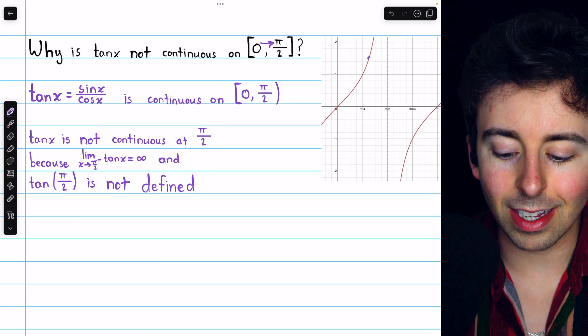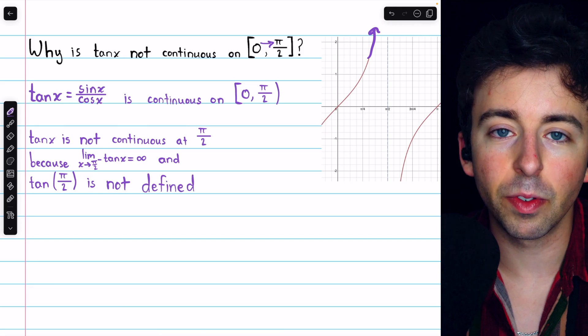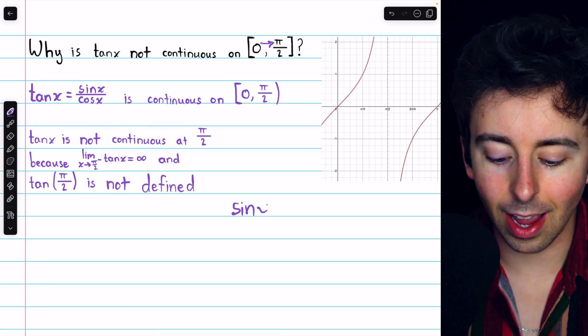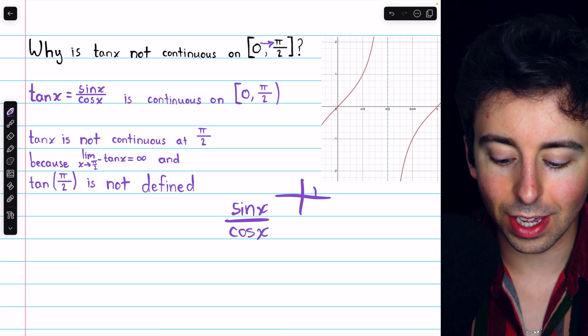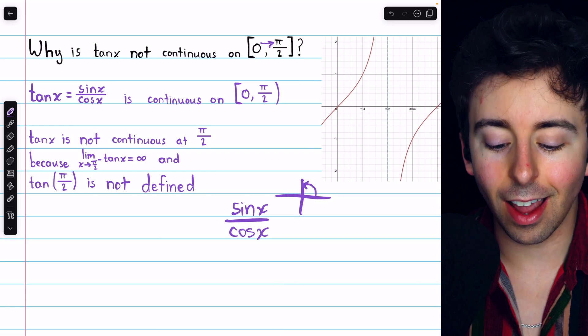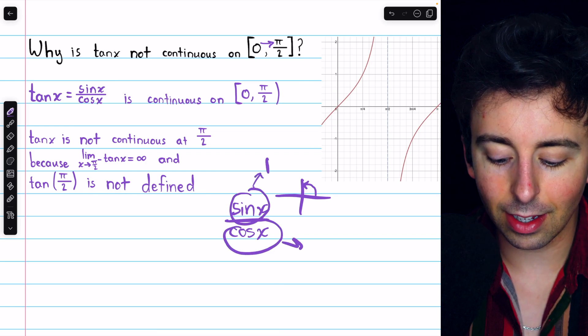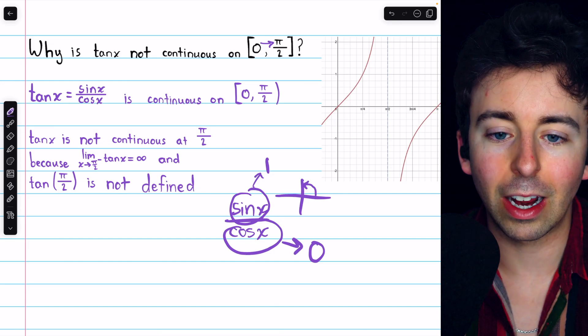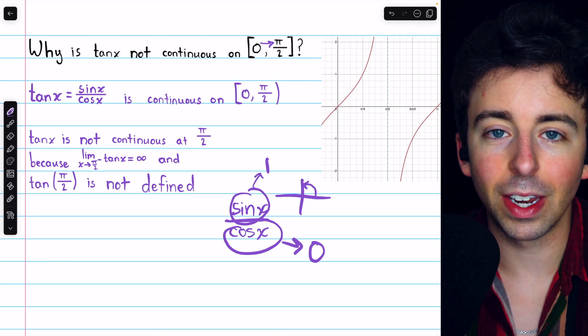For one, we see that from the graph. We've got a vertical asymptote, and it's going to positive infinity from the left. For two, we know that tan x is sine x over cosine x. And as x is approaching pi over 2, thinking about that unit circle, sine x is approaching positive 1, whereas cosine x is approaching 0, but it is doing so from the positive direction. So tan x is indeed going to positive infinity.